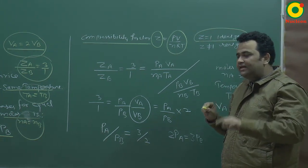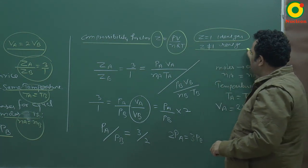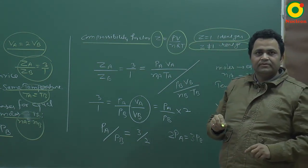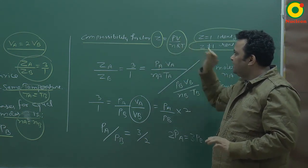And if the gas is real, then PV is not equal to nRT. Then Z is not equal to 1 for real gas. So compressibility factor Z, which is PV upon nRT.